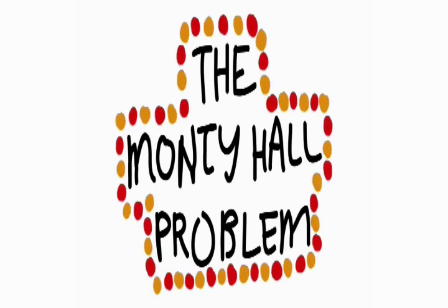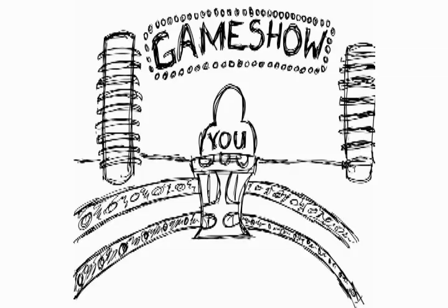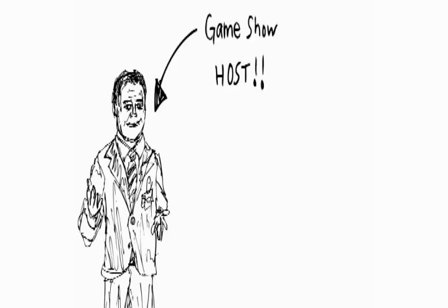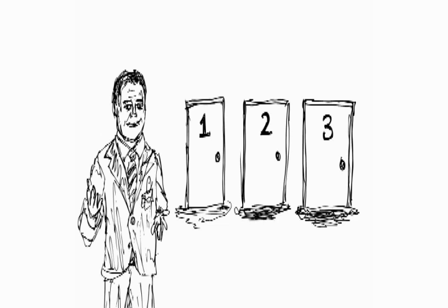The Monty Hall Problem. You are on a game show. The host of the game show reveals three doors. Behind one of the doors is a big bag of cash. Behind the other two doors is a single peanut.